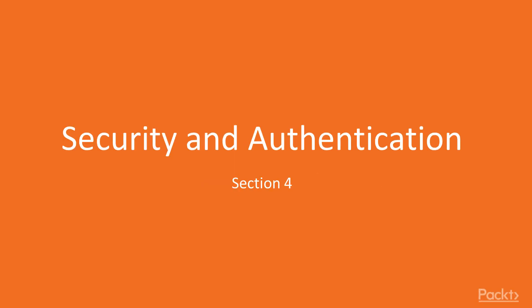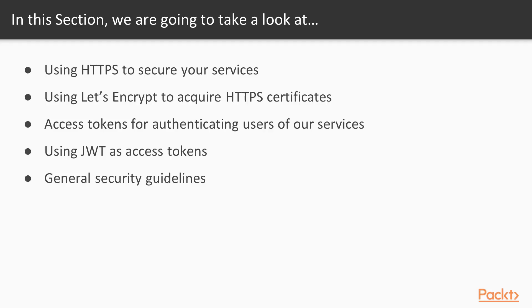This is Section 4: Security and Authentication. In this section we're going to take a look at using HTTPS to secure your services, using Let's Encrypt to acquire HTTPS certificates, using access tokens to authenticate the usage of our services, using JWT as access tokens, and we'll also be looking at some general security guidelines.